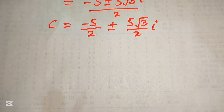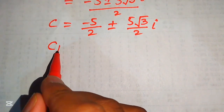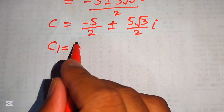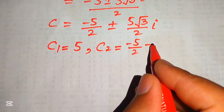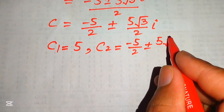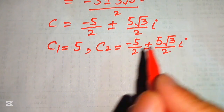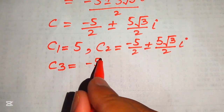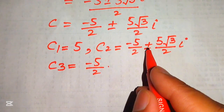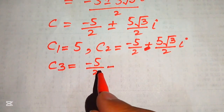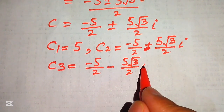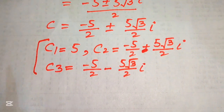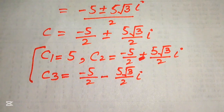Finally, the three roots of the given equation are: c₁ equals 5, c₂ equals minus 5 over 2 plus 5 times square root of 3 over 2 times iota, and c₃ equals minus 5 over 2 minus 5 times square root of 3 over 2 times iota. These are the final three roots and the final answer. Thank you so much for watching — please subscribe to my channel for more exciting videos.